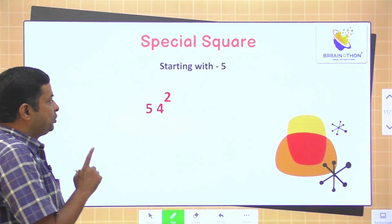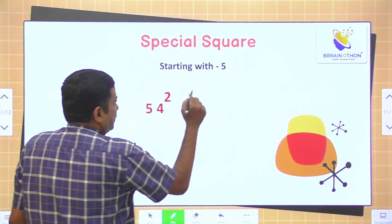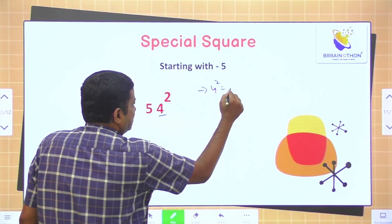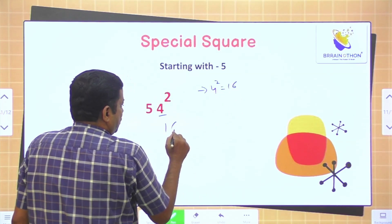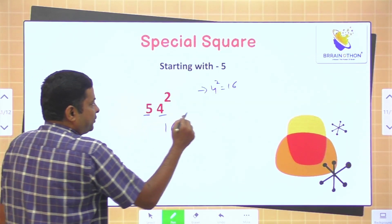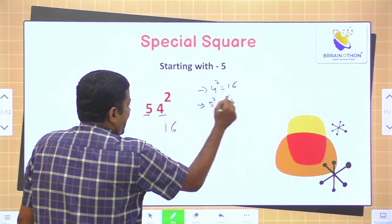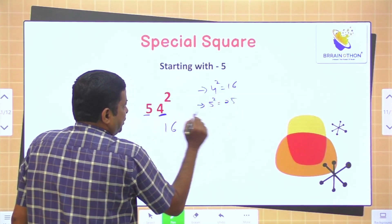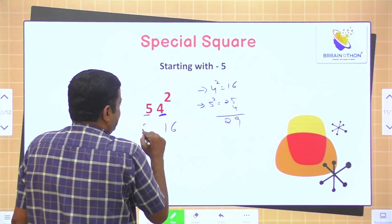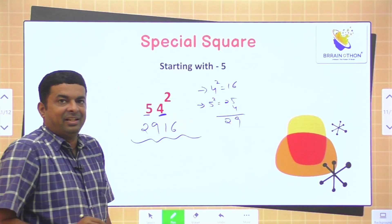This is how you can find the square very fast. We have one more question: 54 square. We will follow the same steps. 4 square is 16 — already 2 digits, so no need to put 0. Then find the square of 5: 5 square is 25. Add the unit digit 4: 25 plus 4 is 29. Our final answer is 2916.